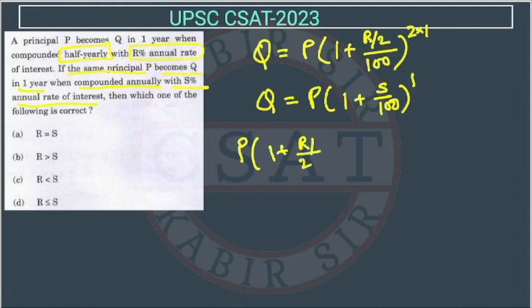So we can write them like this. So this will be R upon 200 whole square is equal to P, 1 plus S upon 100. So this P will cut this P. So now we have to just tell which is greater or which is less, R is greater or S is greater.